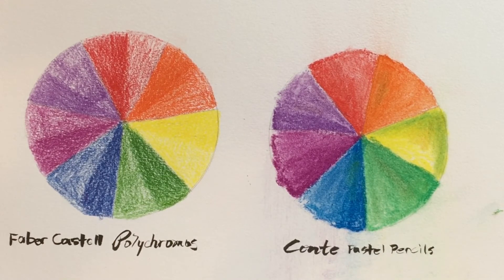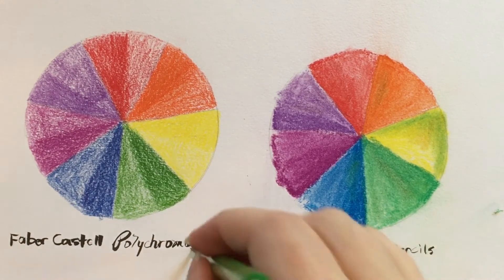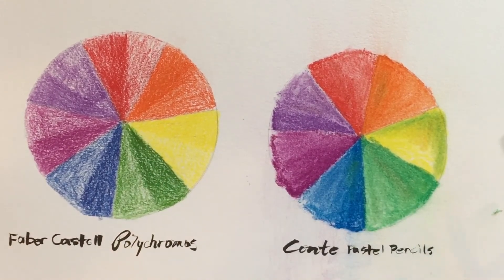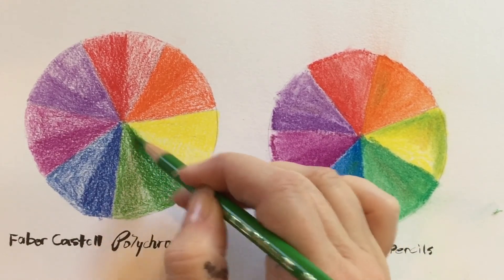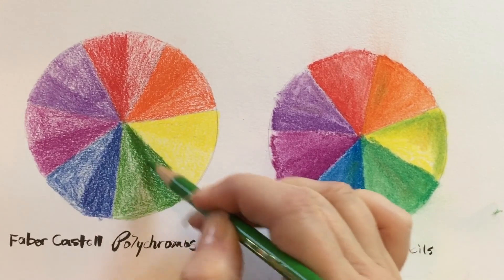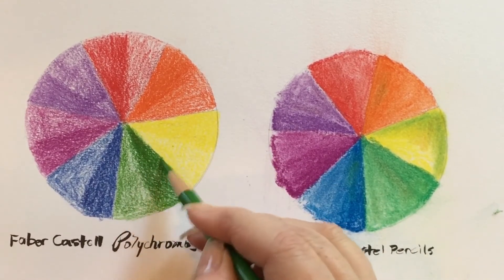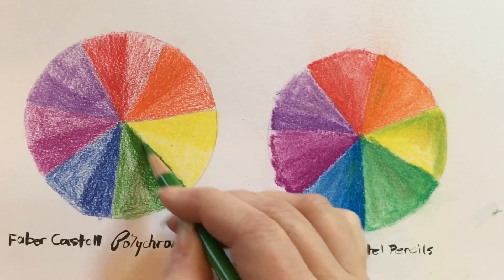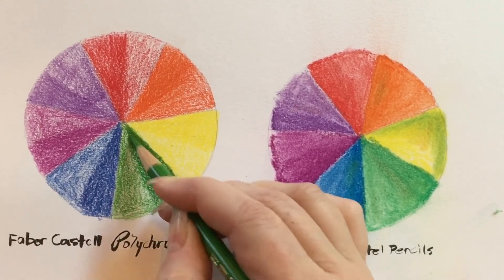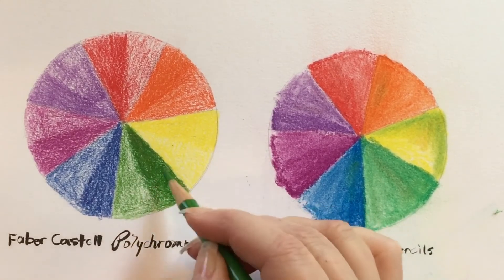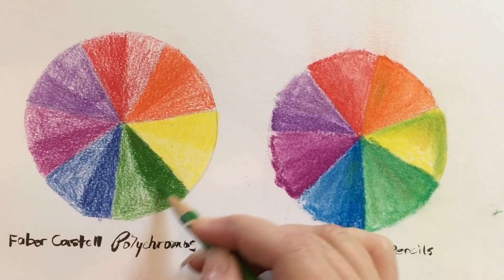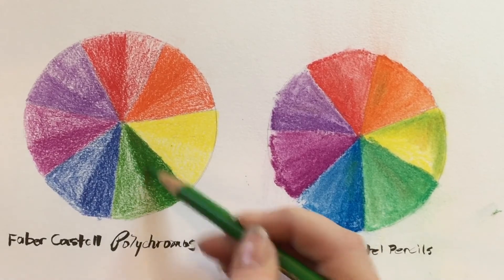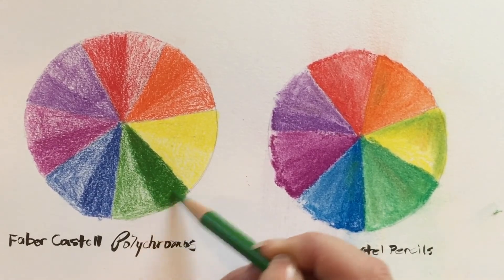The Faber-Castell Polychromos pencils can do other things. For example, you can't burnish a pastel pencil. So I'm not going to go over all of them, but if you take one of these Faber-Castell pencils, and you go over and over again, and you push hard enough, the area that you color becomes very shiny. And it can make really wonderful effects for the ocean or for something sparkling. And you can get much more intense colors after you go over it quite a bit.